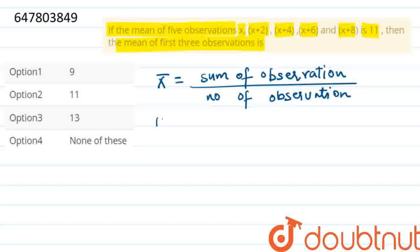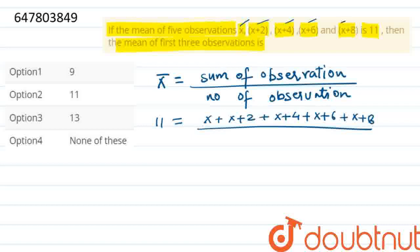तो हमारे पास mean तो दियावा 11 and is equal to x plus x plus 2 plus x plus 4 plus x plus 6 plus x plus 8. So अपन में है 1, 2, 3, 4, and 5. 5 observations.